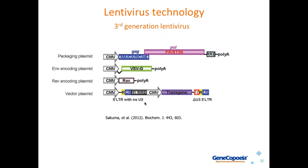This third generation technology is also known as self-inactivating, or SIN, which makes it unable to produce competent virus. Additionally, the fact that these four different plasmids would all need to recombine into a functional plasmid makes replication-competent virus generation extremely unlikely, and the SIN quality ensures they remain unable to produce competent virus even in that unlikely event.